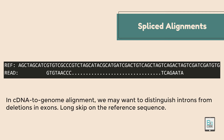Spliced alignments are used when aligning cDNA to a genome, where we need to distinguish introns from exons. In this scenario, skipping is utilized — only the exonic or intronic regions are put forward, and the skipped region is indicated in the alignment.